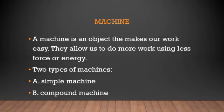Machine is an object that makes our work easy. They allow us to do more work using less force or energy. Now, if you are having an aquarium in your house and you are going to catch a fish, it becomes difficult for you to catch a fish in your bare hand. And when you use a simple net, that is kind of a machine, that is kind of a simple machine that you will use. It becomes easier to catch the fish like that.